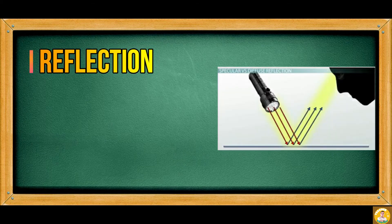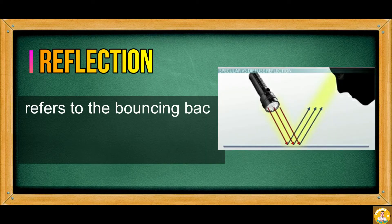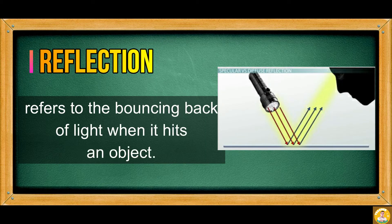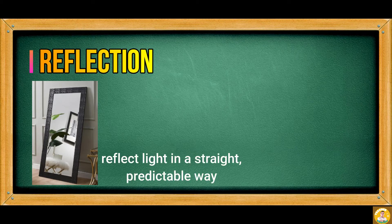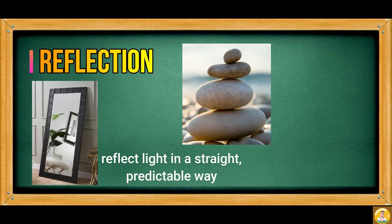Reflection refers to the bouncing back of light when it hits an object. Some objects with flat surfaces, like mirrors, reflect light in a straight and predictable way. Some objects with uneven surfaces, like rocks, reflect light in a scattered way.